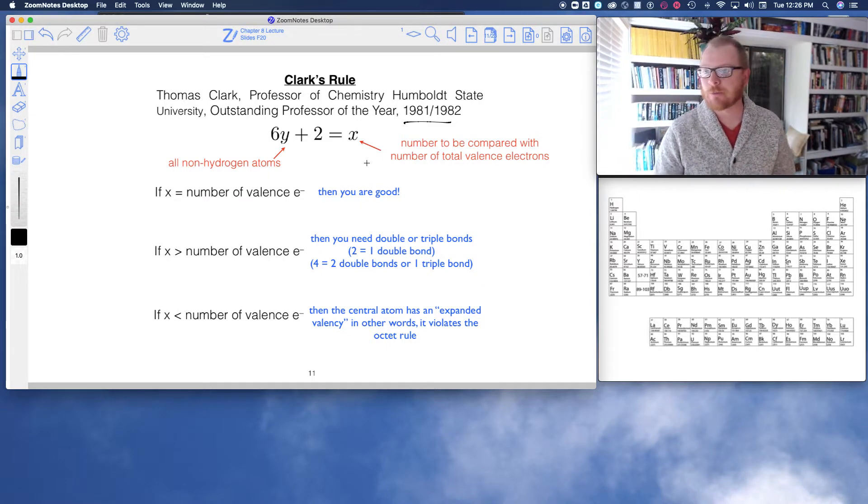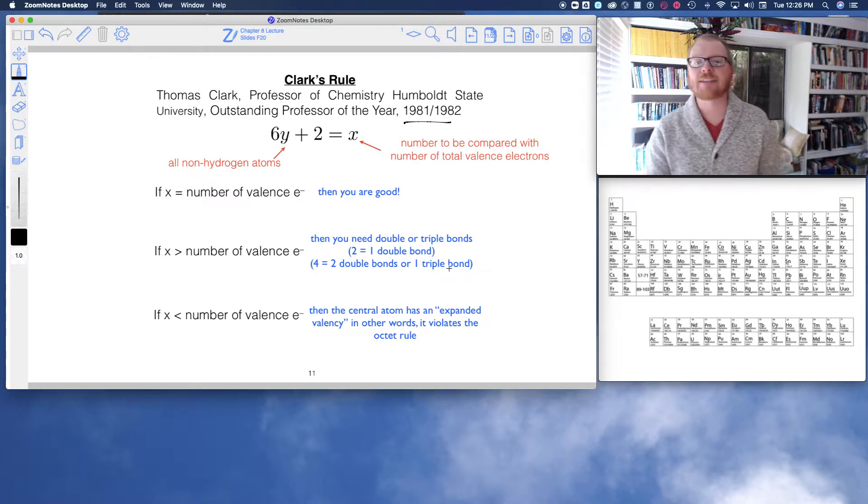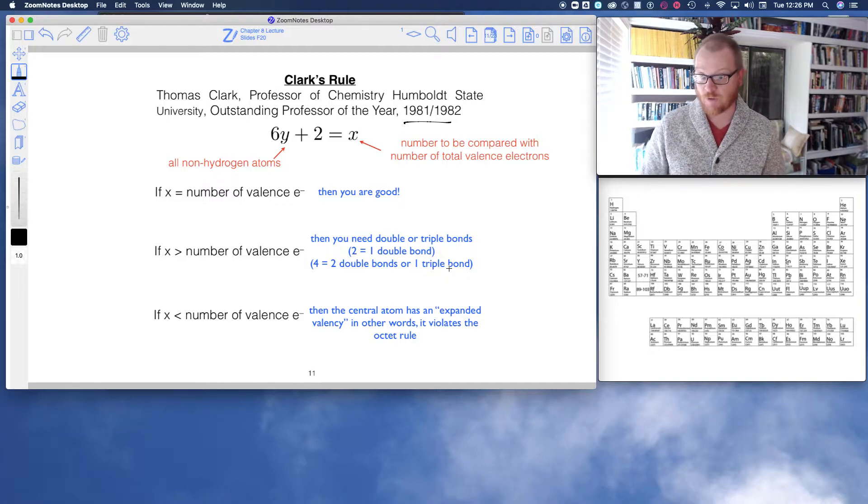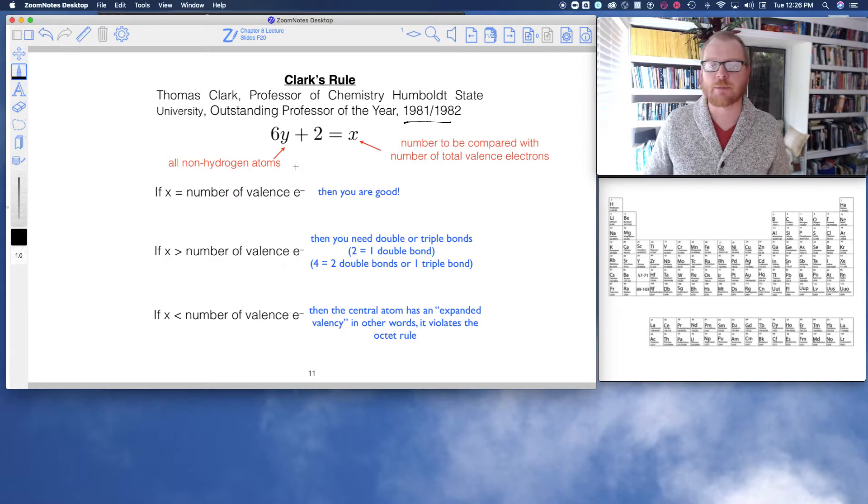6y plus 2 equals x. That's the equation he came up with. So what does this equation mean? In this, y are all non-hydrogen atoms. x is this number to be compared with the total number of valence electrons. And I'm going to work through some examples. It's kind of an obscure-looking equation. The math is obviously simple, but we'll work through some examples to see what this does.